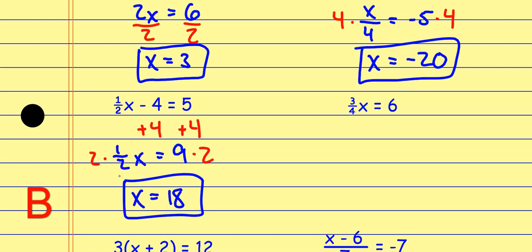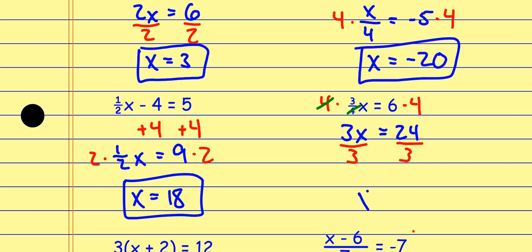Think of fractions as division — it makes them a lot easier to deal with. If I look at X times three over four as a two-step equation: that's X times three, and that fraction bar is a division sign — so it's times three divided by four. I can undo the division first: to undo dividing by four, I multiply by four on both sides. The fours cancel, so I'm left with 3X. Now to undo multiplying by three, I divide by three. And I get X equals eight.